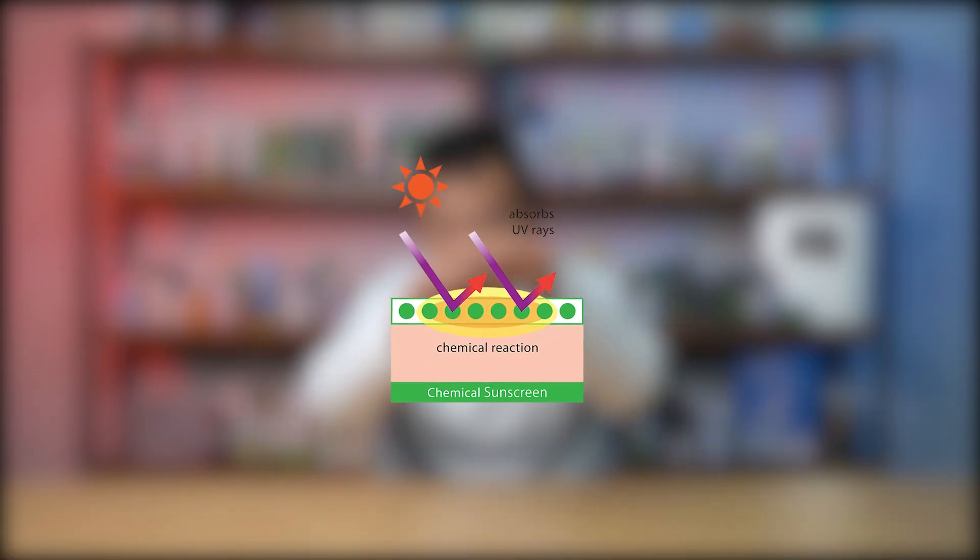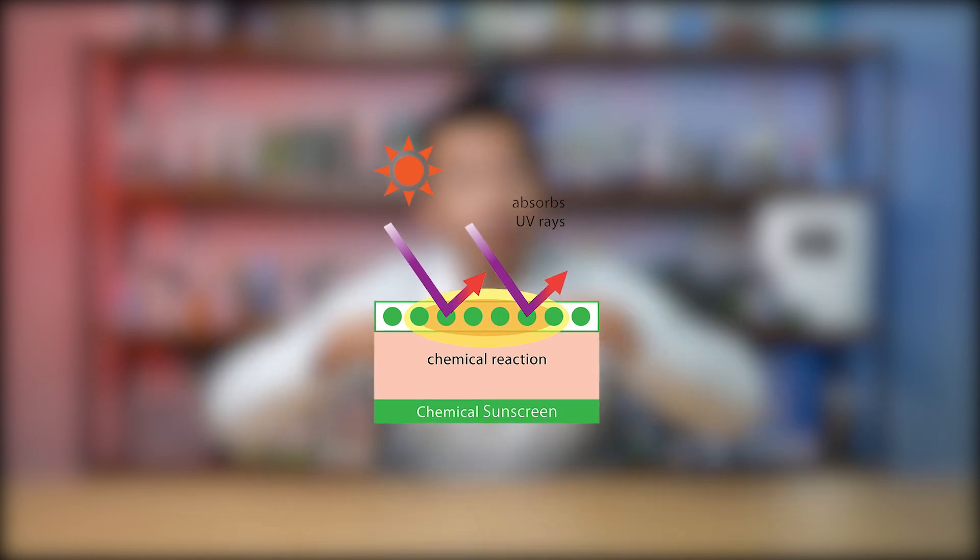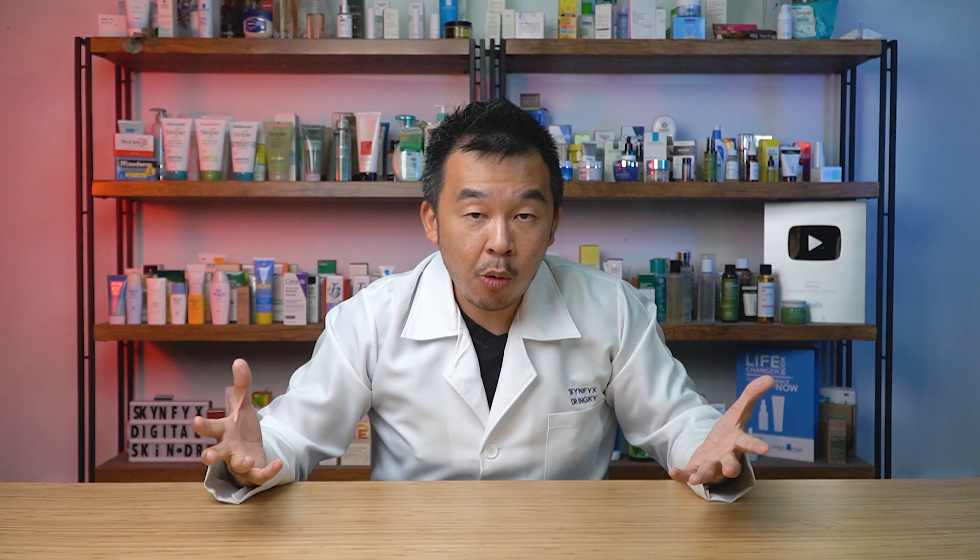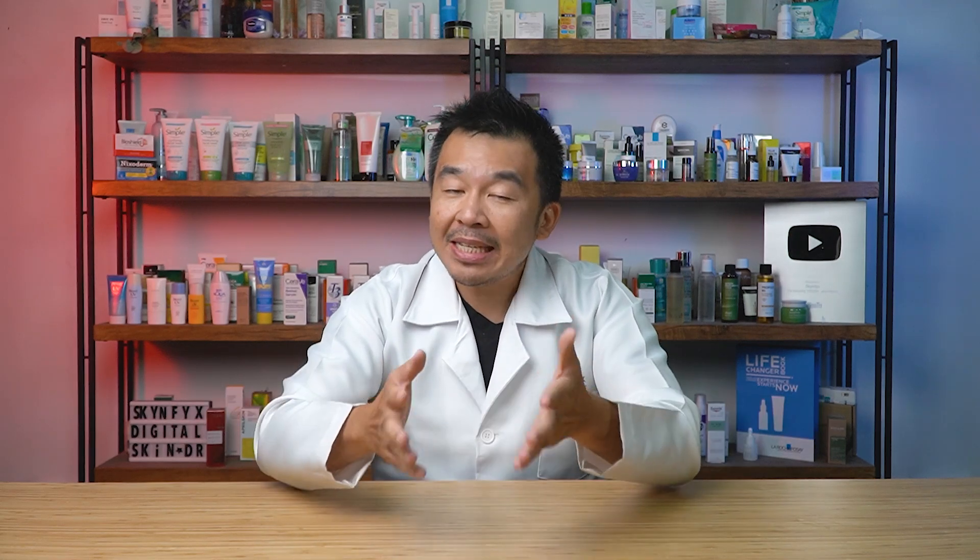The chemical sunscreen forms a layer within your epidermal layer, absorbs UV rays, converts them to heat, and spreads it around. The heat dissipates into your skin and the surrounding environment, but there's no need to fear — only five to seven percent of visible light is actually UV rays, so the heat produced doesn't increase your skin temperature significantly, likely less than one degree Celsius. After converting UV to heat, the chemical structure relaxes, then absorbs more UV and converts it again — and the cycle continues.